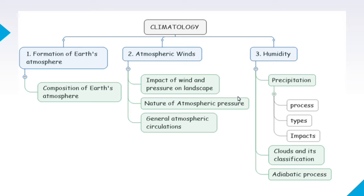The process of formation and composition of the Earth's atmosphere includes oxygen, carbon dioxide, and other gases. In chronology, the layers include troposphere, stratosphere, etc. Then in climatology: atmospheric wind, impact of wind and pressure on landscape, nature of atmospheric pressure, general atmospheric circulation, humidity, precipitation in terms of rainfall, snowfall, hailstorm, the process of rainfall — convectional rainfall, orographic rainfall, cyclonic or frontal rainfall — and then clouds and their classification: cirrus, the highest cloud, cumulonimbus, cirrostratus, and the adiabatic process concept.